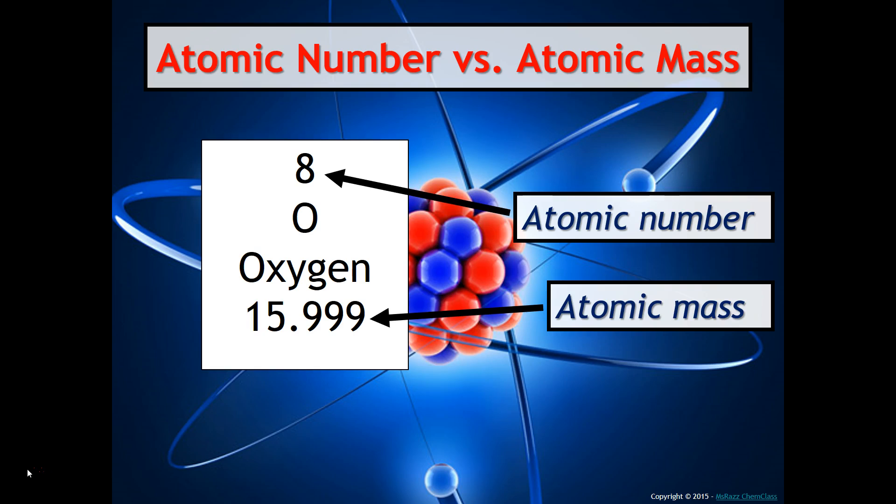I think it might be a good idea for you to take your periodic table and just double-check, for oxygen, where the atomic number is and where the atomic mass is. Some periodic tables even have almost like a key that allows you to know where each of these things is.